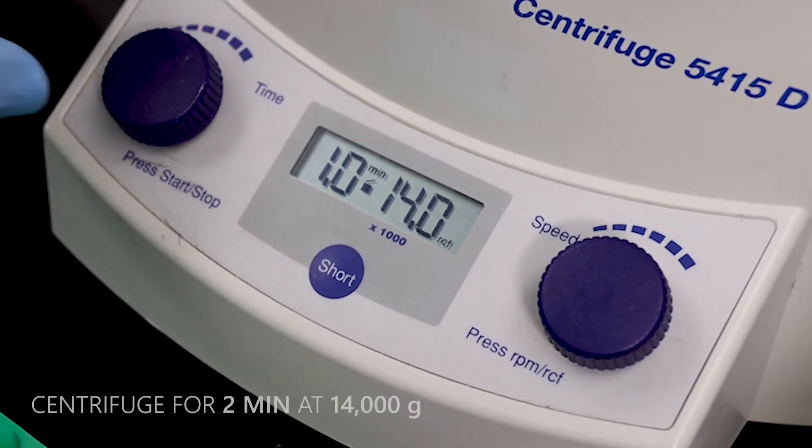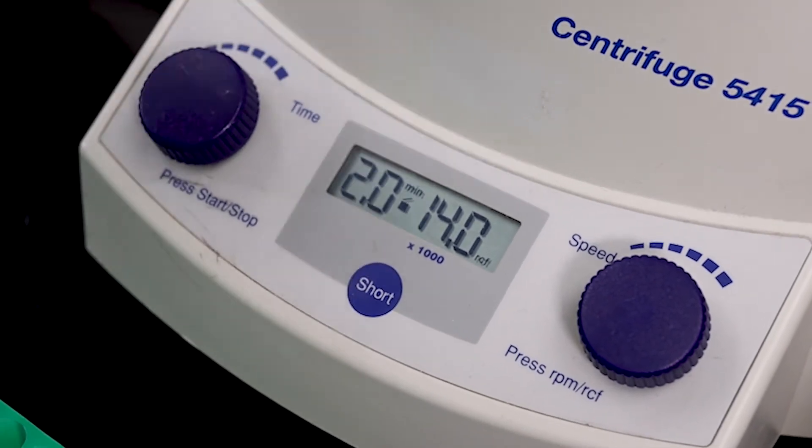After discarding the flow through, centrifuge the spin column for 2 minutes at 14,000 G to dry.